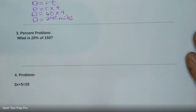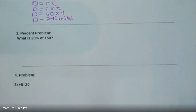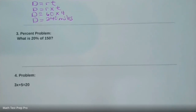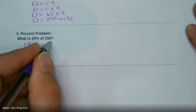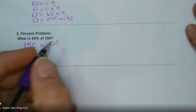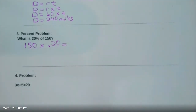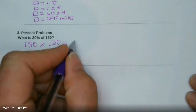Number three is the percent problem, and it asks simply: what is 20% of 150? Percentage problems — what is 20% of this number, what is 90 is 30% of what number — there's some confusion in there, but these are really easy. When it comes to what is 20% of 150, you want to take 150 and multiply that by 0.2, which is the decimal version of 20%. 150 times 0.2 is 30, and that's your answer.